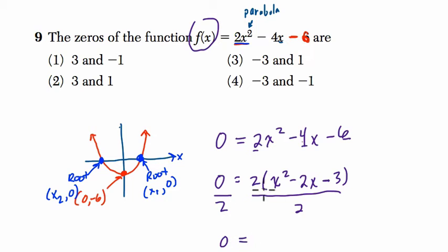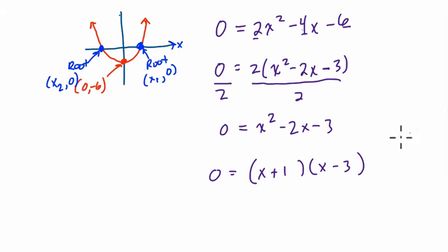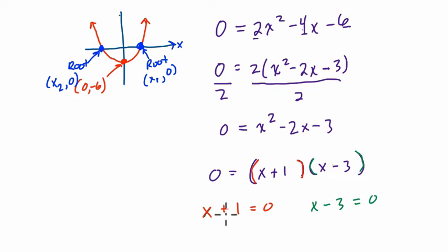0 divided by 2 is 0, and 2 divided by 2 is just 1 — in multiplication, 1 doesn't matter. So we have x squared minus 2x minus 3. To factor this, I've got to find two numbers that multiply to negative 3 but add to negative 2. Those two numbers are positive 1 and negative 3. So we can write this as (x + 1)(x - 3) = 0. Either x plus 1 has to equal 0, or x minus 3 equals 0, or they both equal 0.